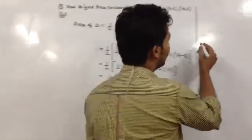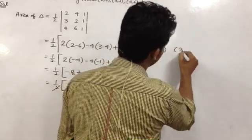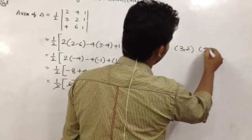Write all 3 vertices like this: (2,4), (3,2), and (4,6).